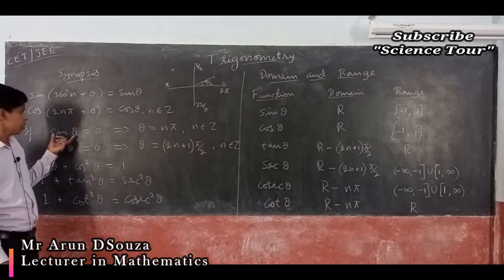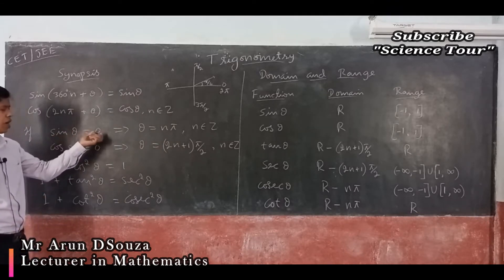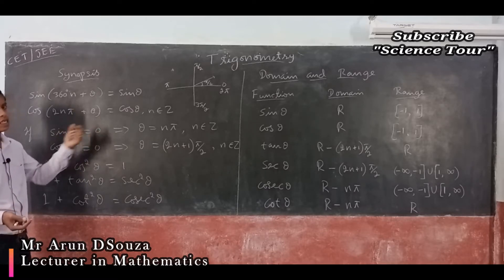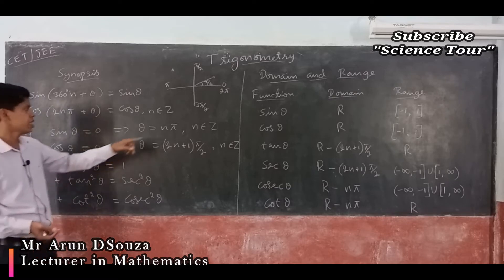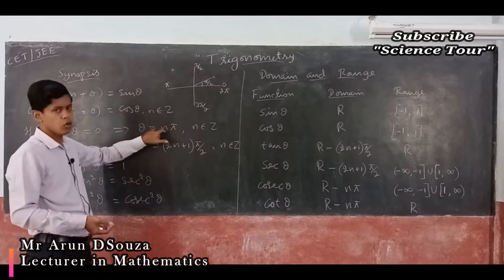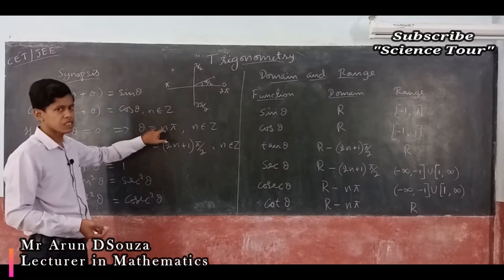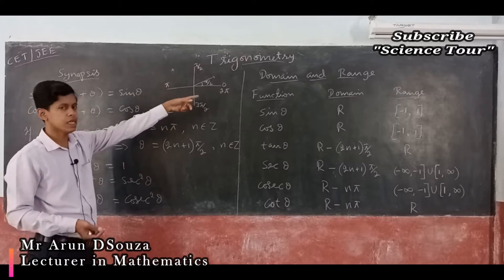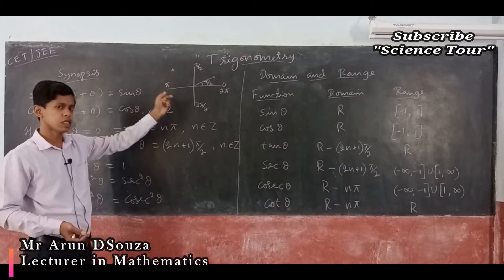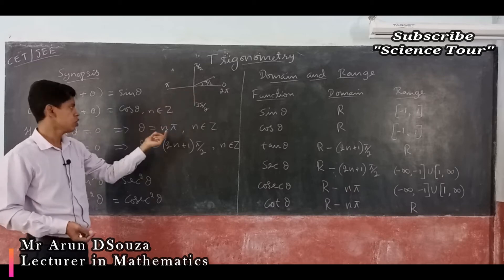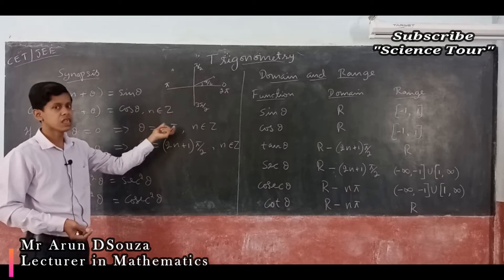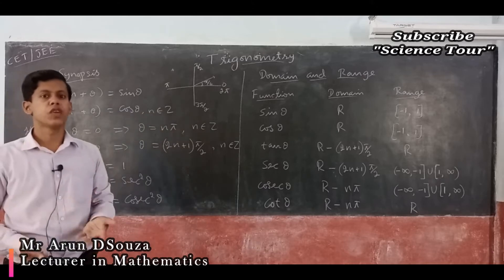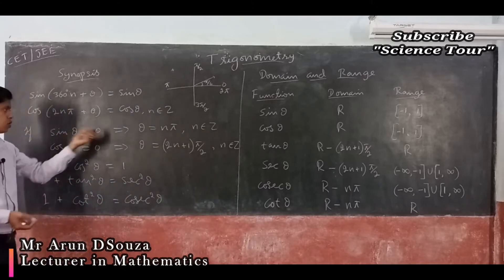Next: for what values of θ is sin θ = 0? You get it at 0, π, 2π, 3π, 4π — for all integral multiples of π. So, sin θ = 0 for θ = nπ, where n is an integer.